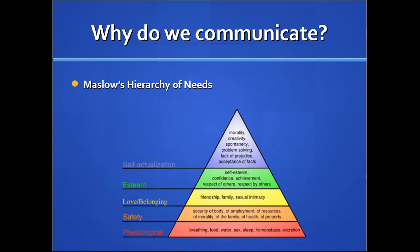We communicate because we need food — we go to the store, we talk to people. We have a job so that we can get food, shelter, water, and things like that, so we have to communicate to get those things. You have to communicate with somebody in order to have a fulfilling romantic relationship, intimacy, and things like that. So Maslow's hierarchy explains a lot about why we communicate.